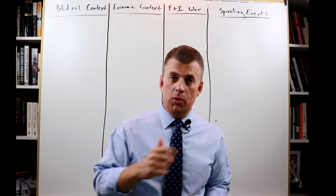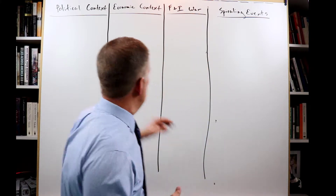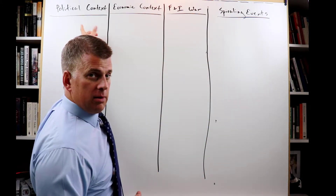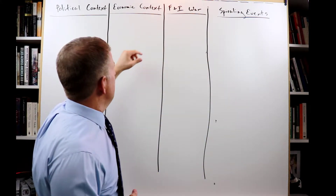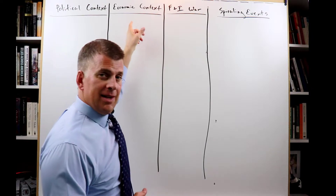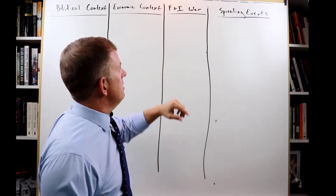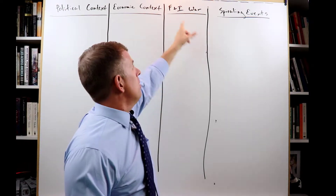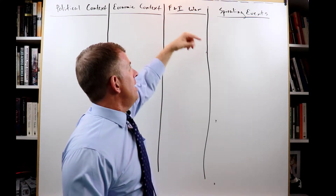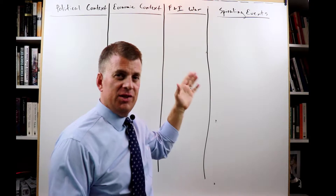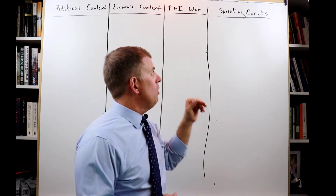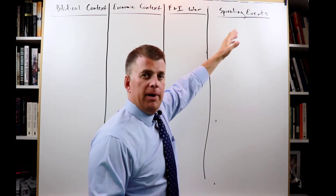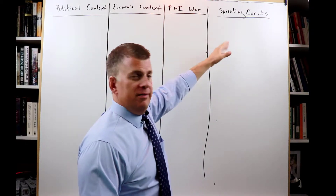Here on the board behind me, we're going to look at the political context, the economic context, the French and Indian War, and what I'm going to call spiraling events.